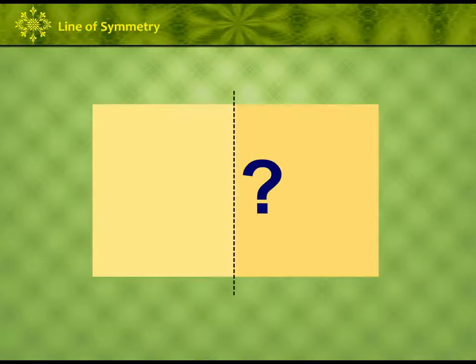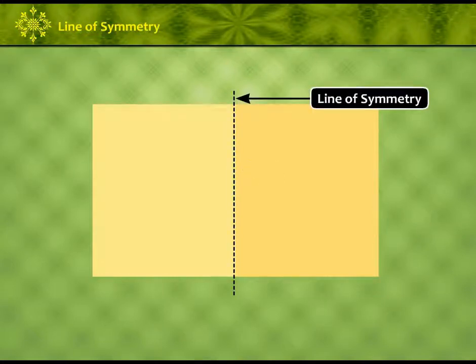Here is a paper of a rectangular shape. Let us first fold it so that we get a center line. Is this fold a line of symmetry? Why? Yes, it is. One side of this shape looks exactly like another if you fold it.